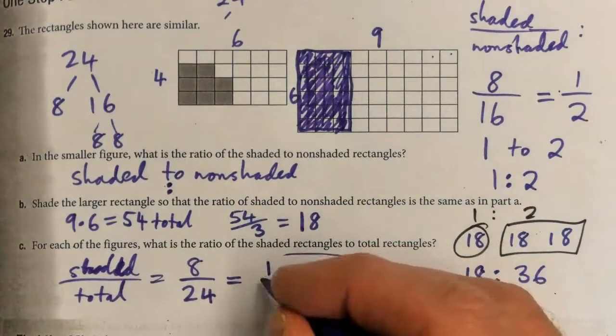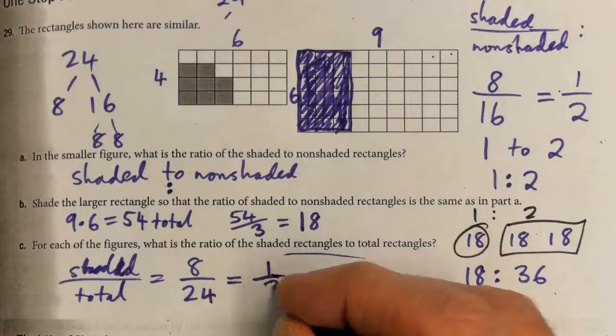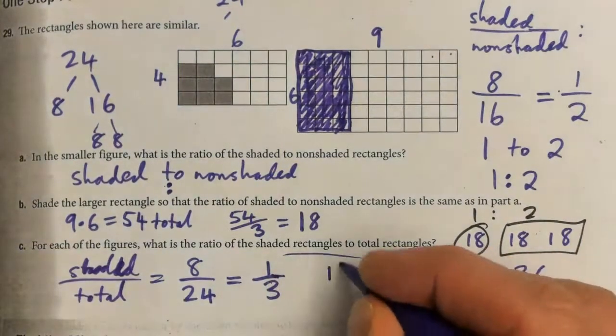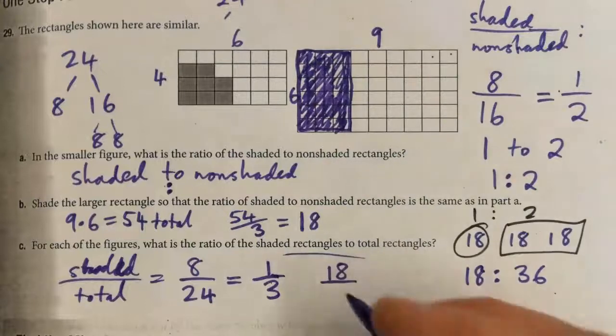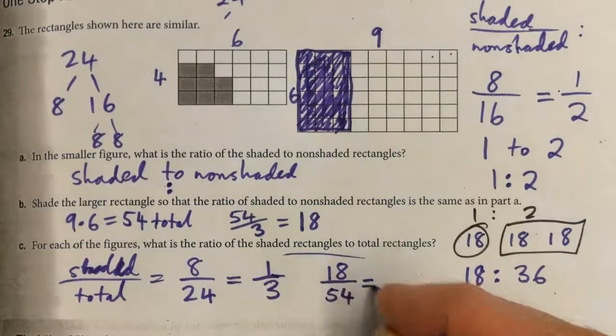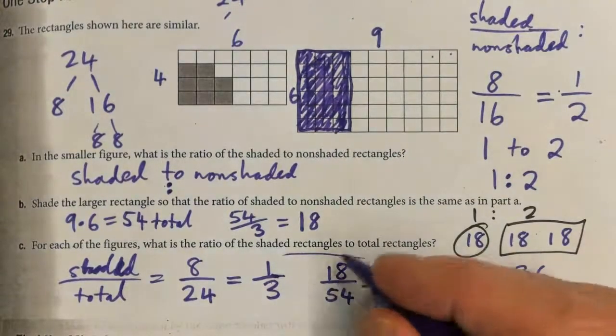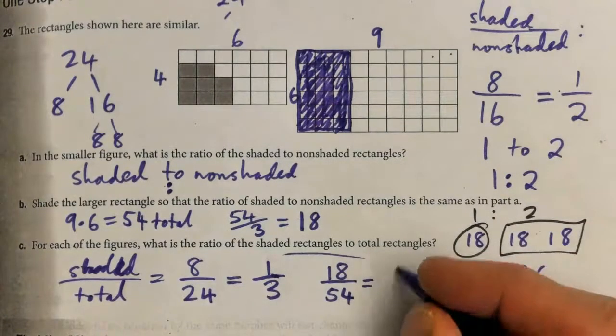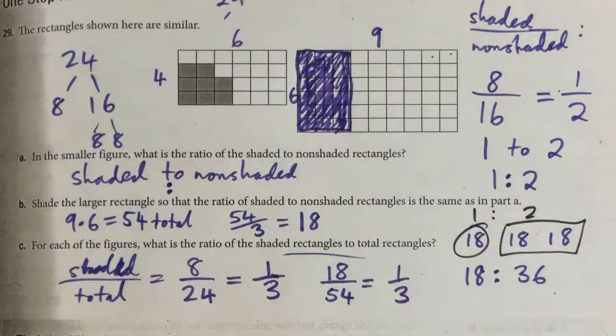That simplifies: 24 goes into 8 one-third. The other one we had 18 shaded over a total of 54. There's three 18s in 54, so it also simplifies down to one-third.